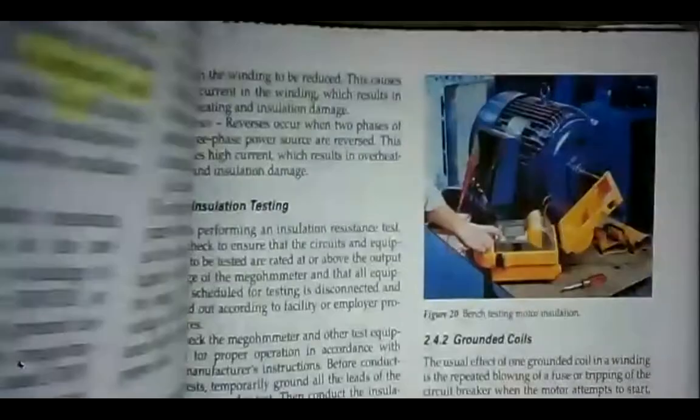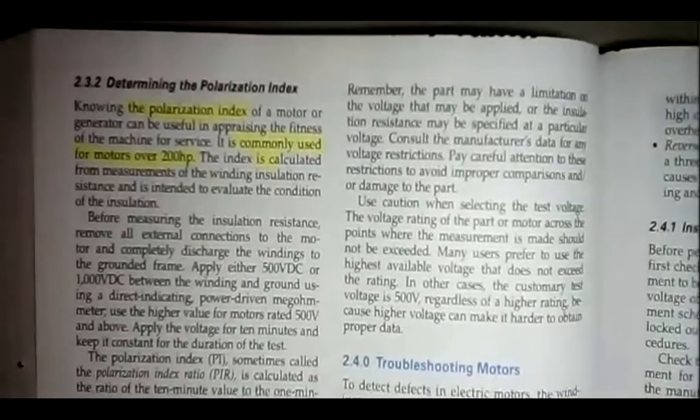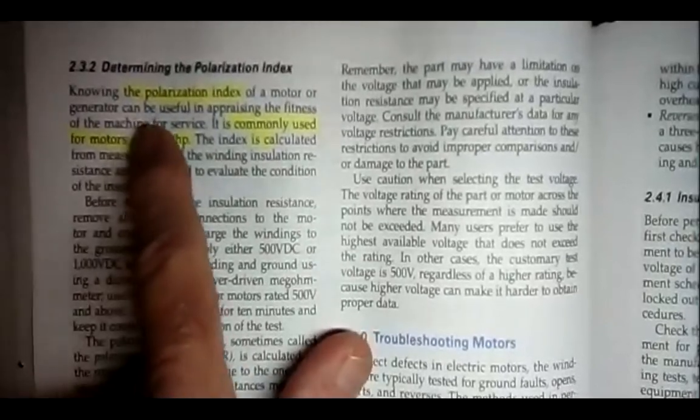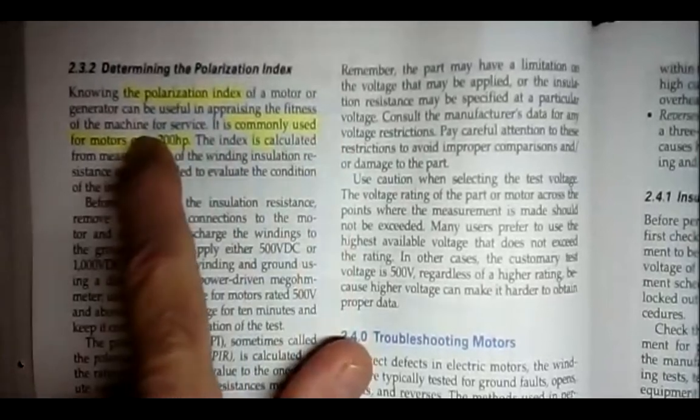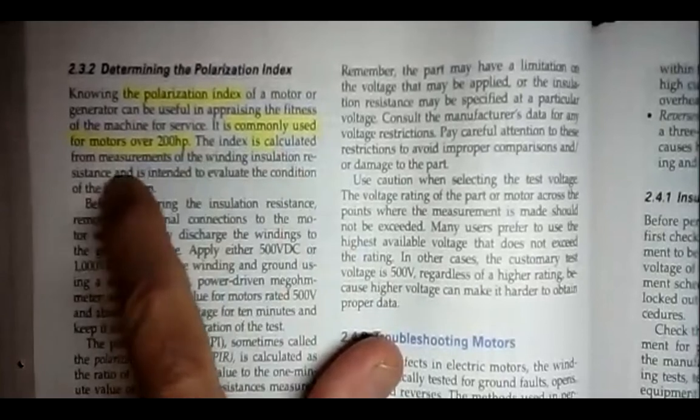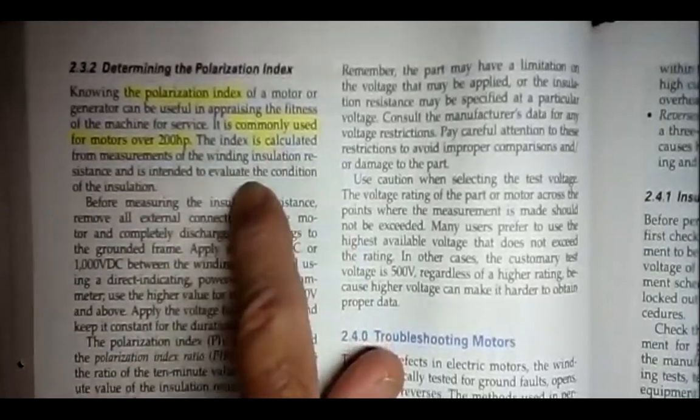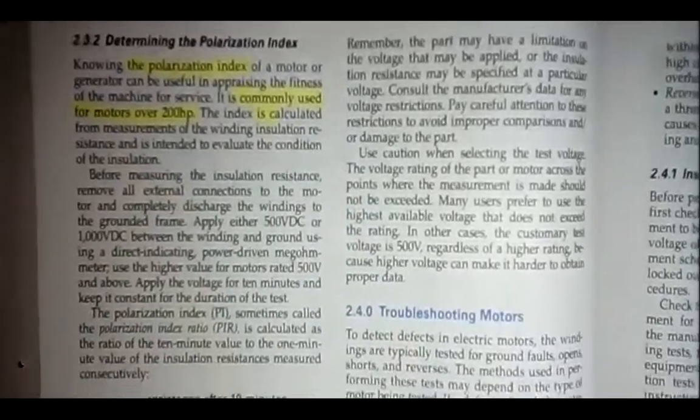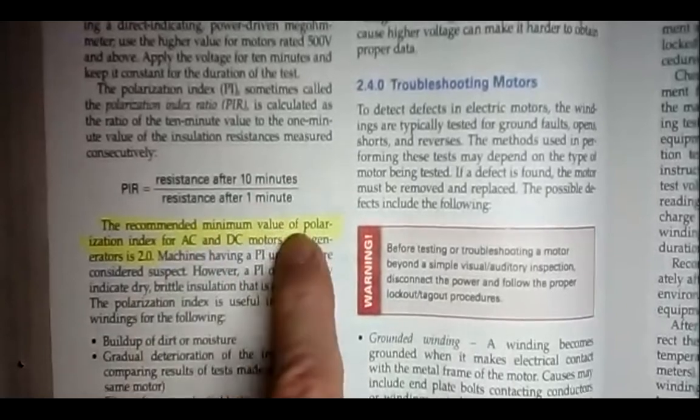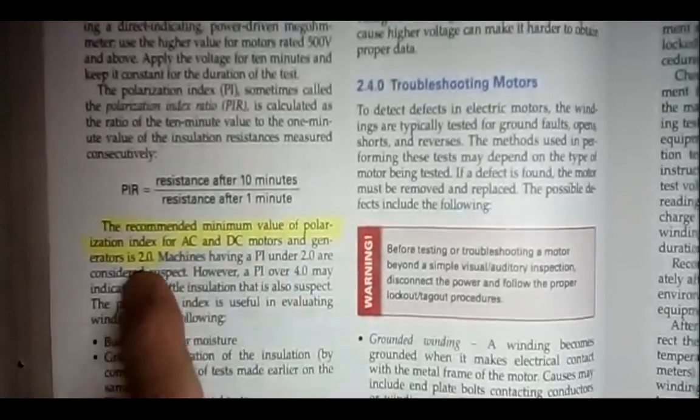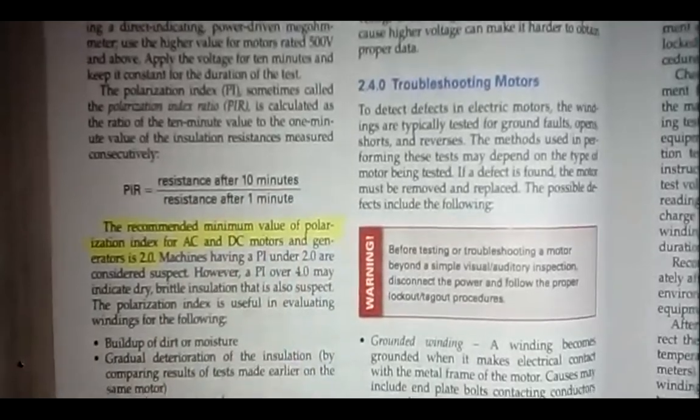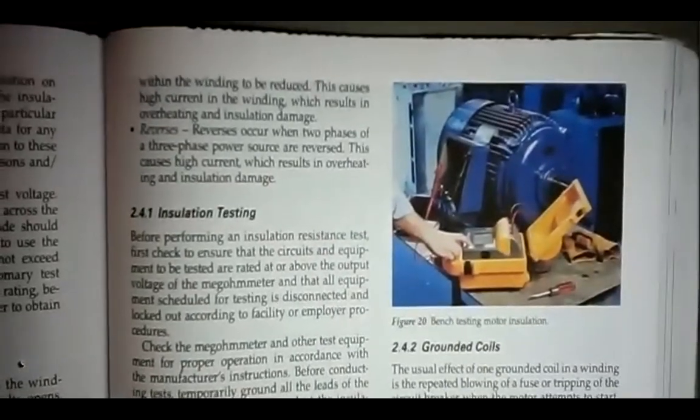And on page 22, on the left-hand column, determining the polarization index. Knowing the polarization index of motor or generator can be useful in appraising the fitness of the machine for service. It's commonly used for motors over 200 horsepower. The index is calculated from measurements of the winding insulation resistance and is intended to evaluate the condition of the insulation. So, it's the polarization index. Basically, you take the resistance after 10 minutes, divide that by the resistance after a minute. Recommended minimum value of polarization index for AC and DC motors is two. You should have twice the resistance after 10 minutes as you do after one minute. So, you would take those two readings and hopefully you've got twice the resistance.